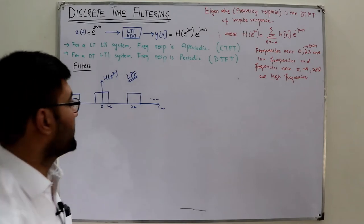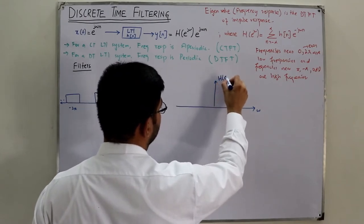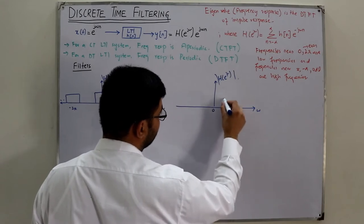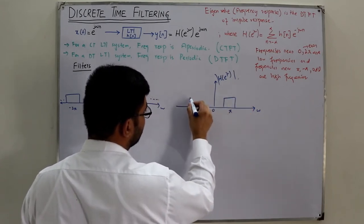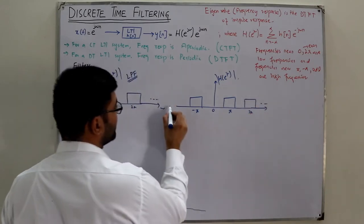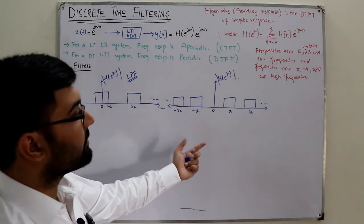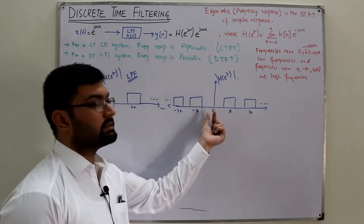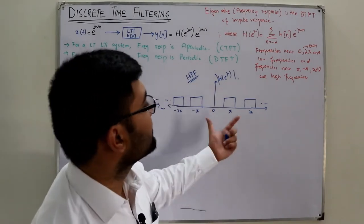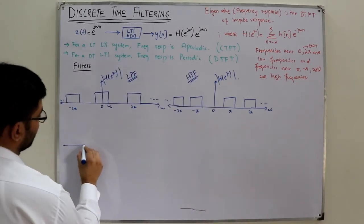For the high pass filter, the magnitude of H(e^jω) passes frequencies near π, -3π, 3π, etc., while attenuating frequencies near 0 and 2π — the lower frequencies. This is the high pass filter behavior. Again, this is a discrete time, periodic frequency response.